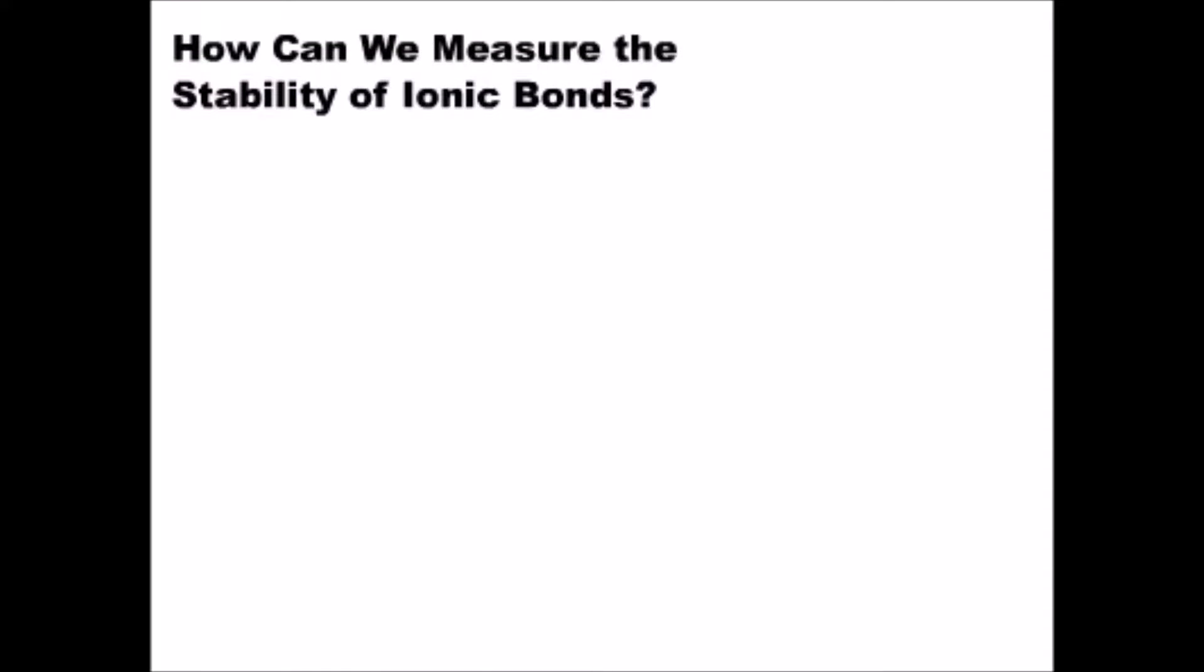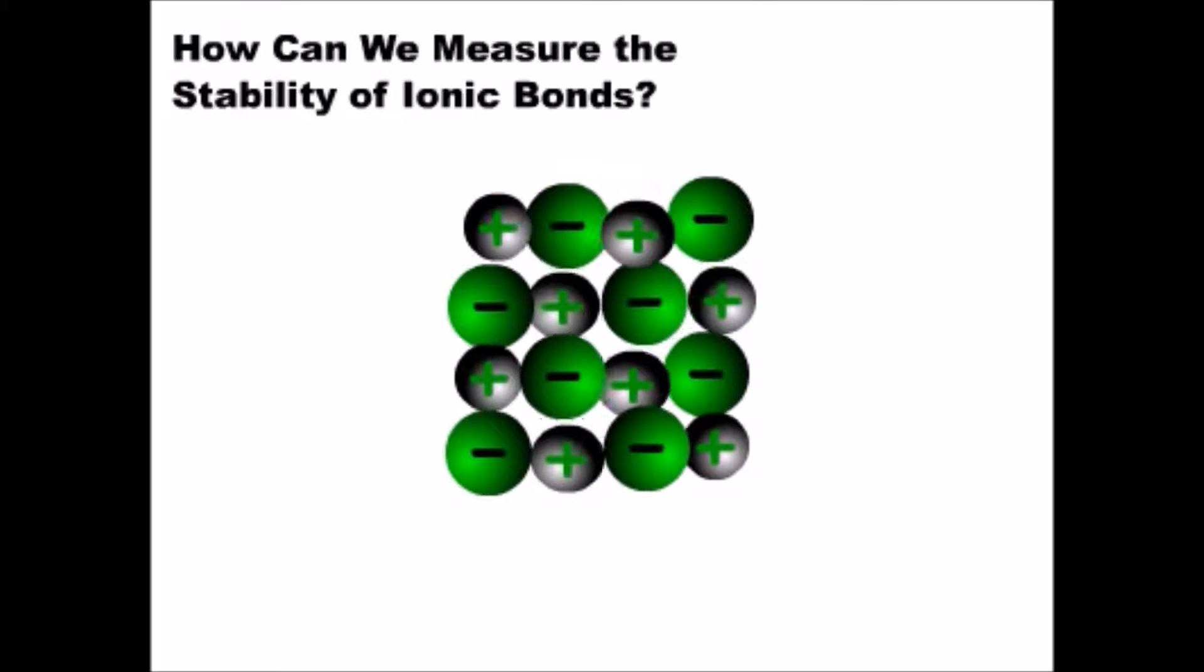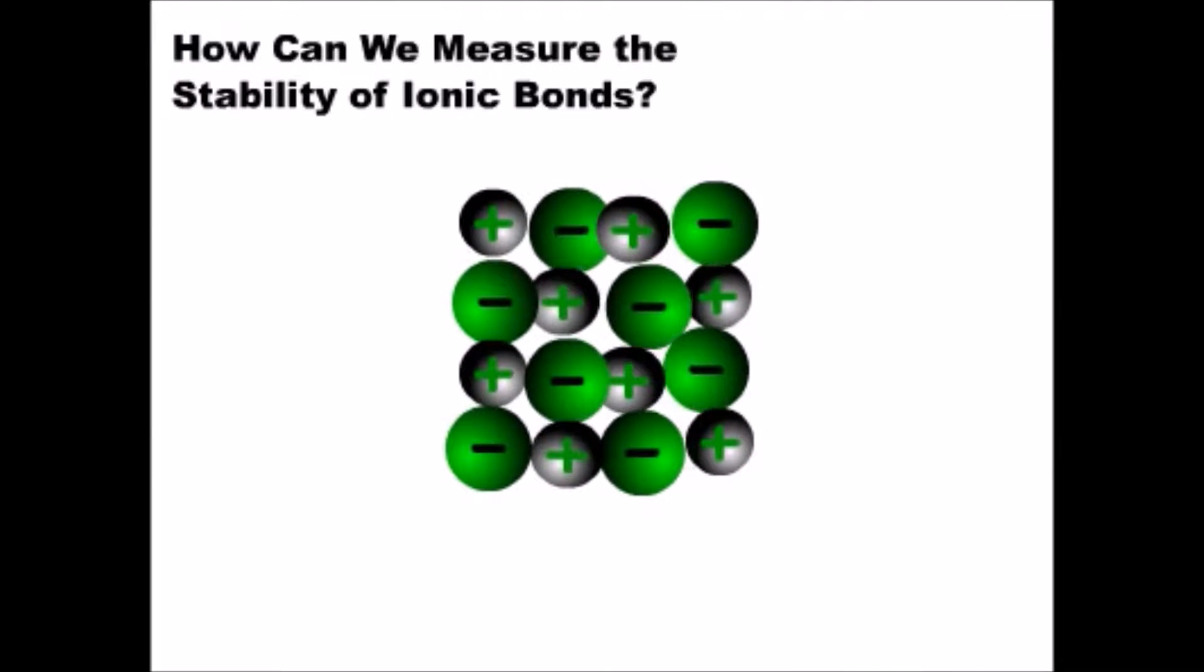How can we measure the stability of ionic bonds? Ionic compounds form due to the strong attraction between a positive ion and a negative ion.